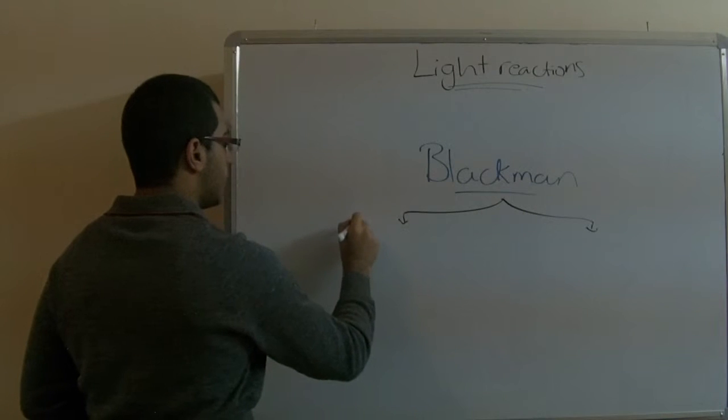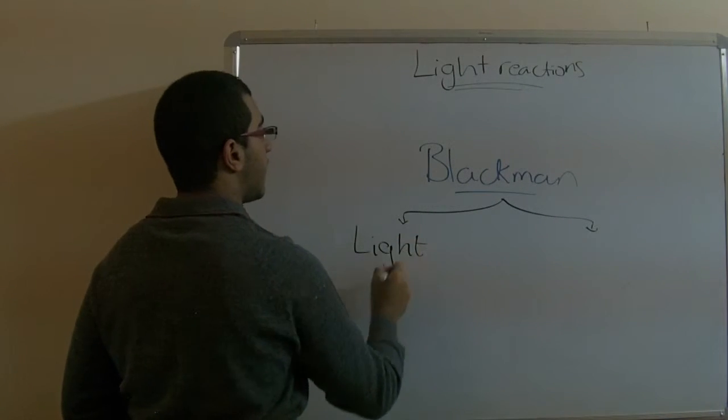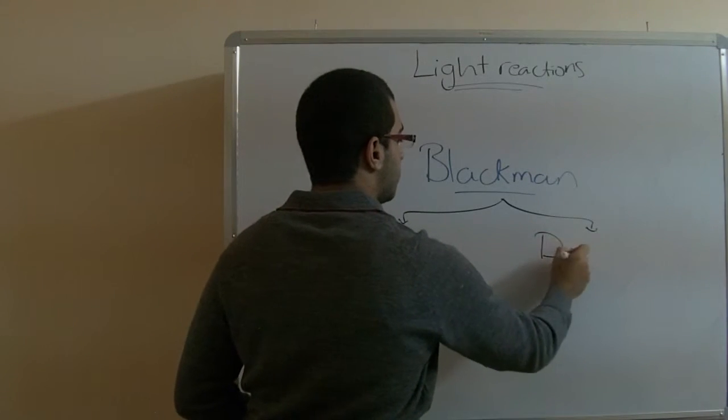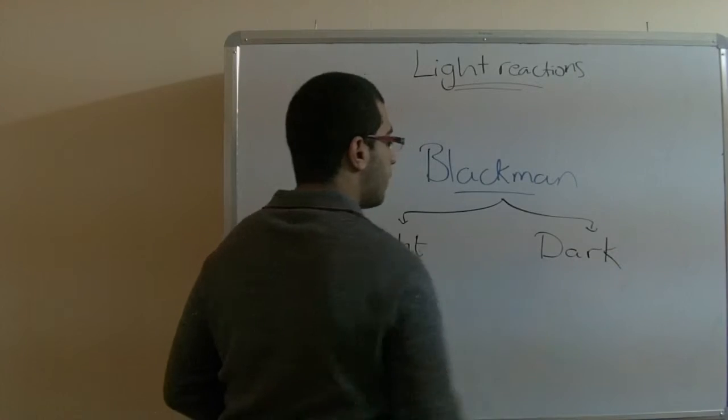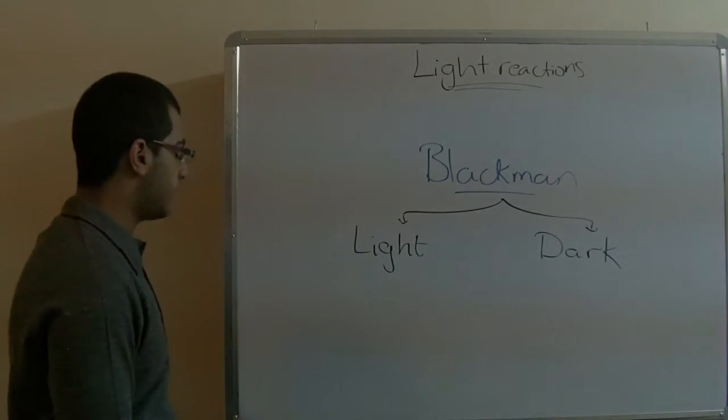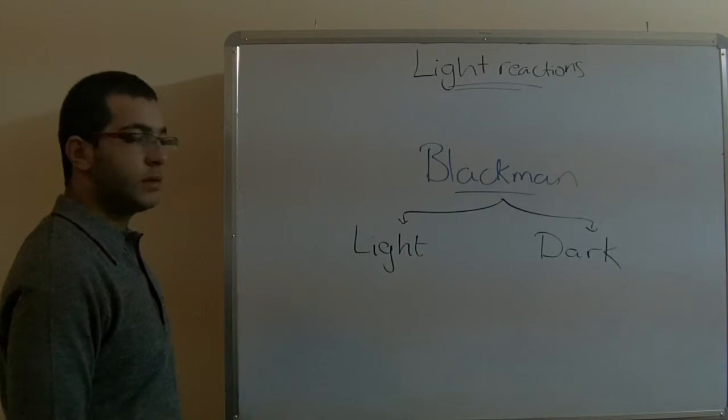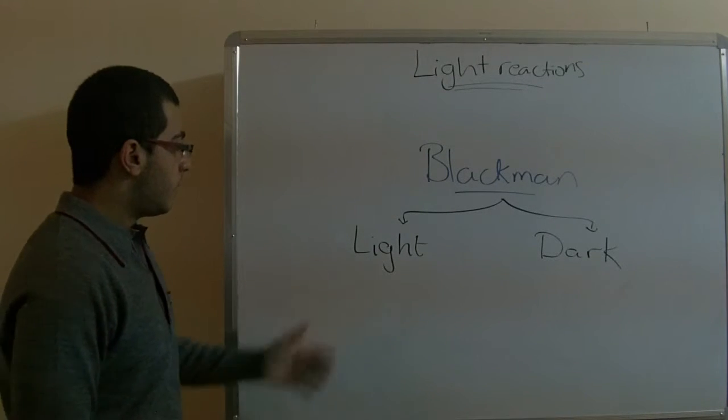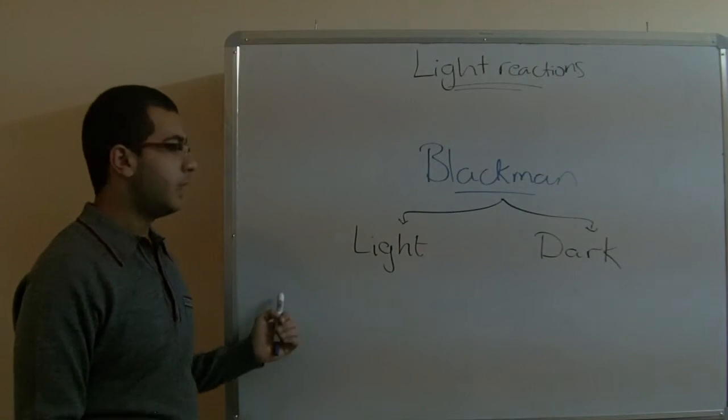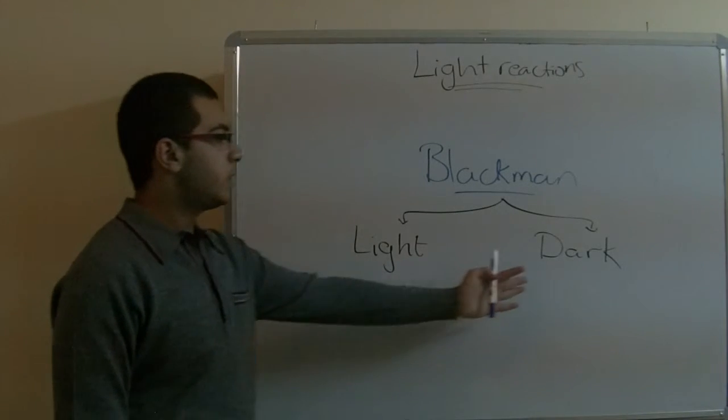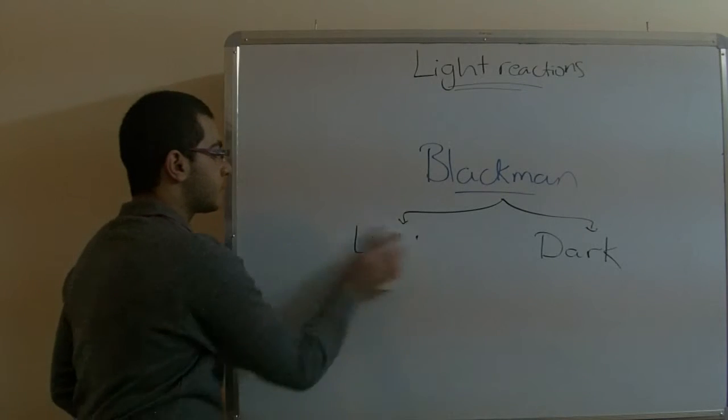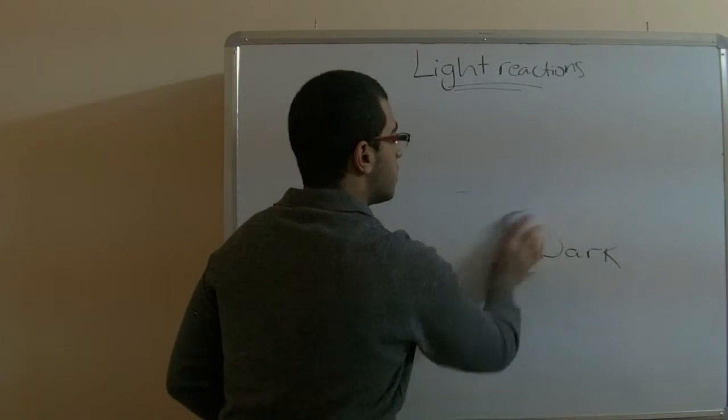The first one is the light reactions, which we'll talk about today, and the dark reactions. These two factors limit the act of photosynthesis. The light reactions depend on the light to take place, and the dark reactions do not require light to take place.